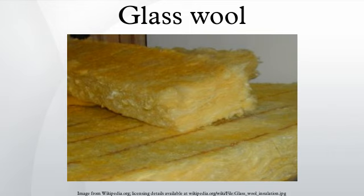It may also be produced as a material that can be sprayed or applied in place on the surface to be insulated. The modern method for producing glass wool is the invention of Game Slater working at the Owens Illinois Glass Company; he first applied for a patent for a new process to make glass wool in 1933.